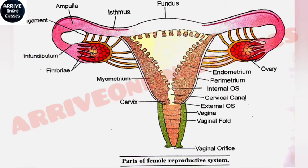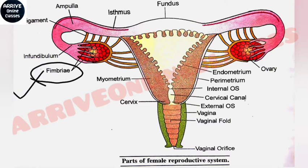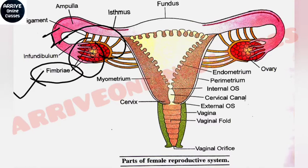Questions are frequently asked from the fallopian tube. The structure of the fallopian tube which helps to attach the ovaries is the fimbriae. This is a finger-like projection which helps the fallopian tube to connect to the ovaries.